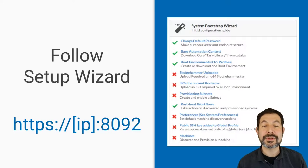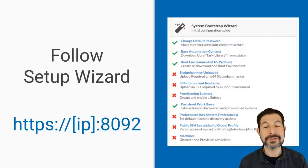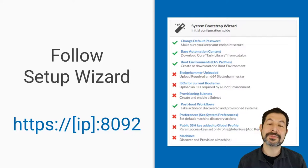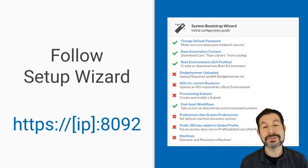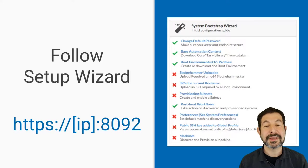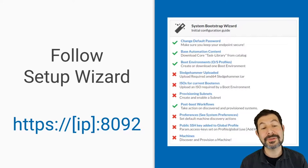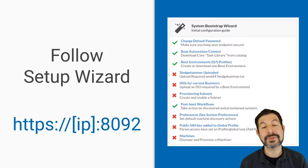From there, go to system information and follow the bootstrapping wizard. The wizard is designed to make sure you have configured all of the pieces and parts necessary for a great trial experience. That includes making sure your passwords are set, setting the base content, making sure you've uploaded the ISOs and boot environments, subnet definitions — if you're in cloud, you don't need to worry about those — preferences, SSH keys, and then finally starting machines. As you accomplish each step, you'll see a checkbox, and clicking the link words will take you to the place you need to go.